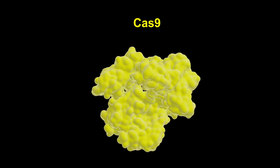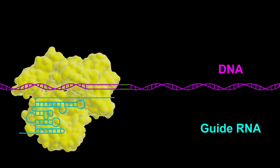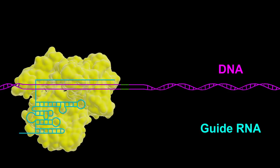Cas9 is an RNA-guided endonuclease that can be directed to any desired genomic location by simply introducing a small guide RNA.